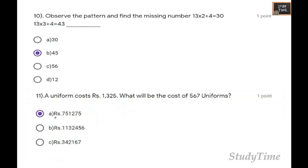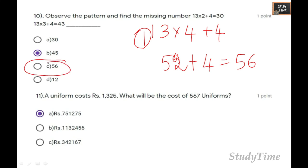Observe the pattern and find the missing number. Here 13 is multiplied with 2 and then added with 4. Next series is multiplied with 3 and then added with 4. Next would be 13 into 4 plus 4, so the answer would be 52 plus 4, that is equal to 56.